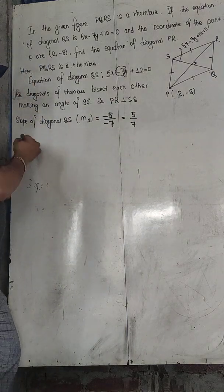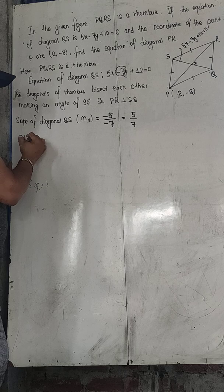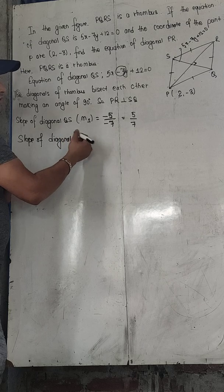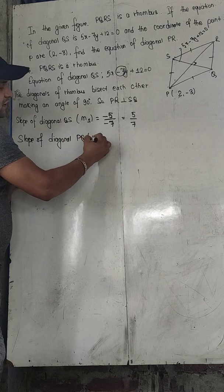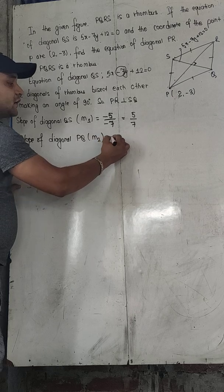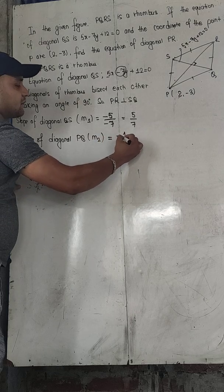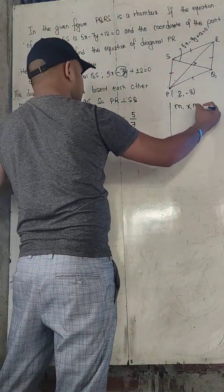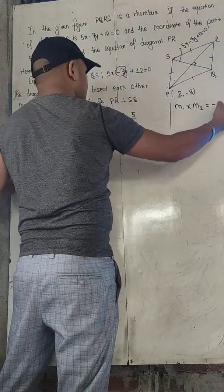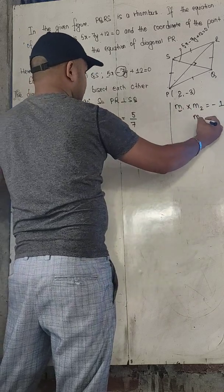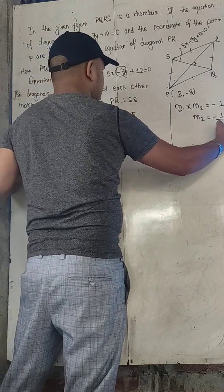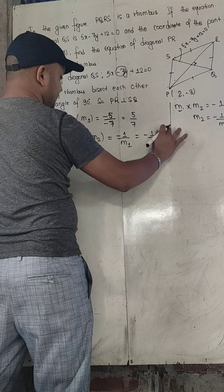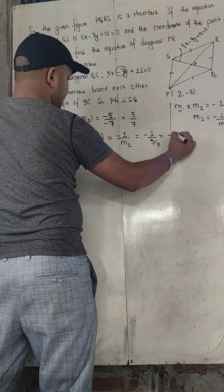So M1, the slope of diagonal QS, is 5 by 7. Now we can find slope of diagonal PR, calling it M2. Since the lines are perpendicular, we can obtain M2 as minus 1 by M1. When two lines are perpendicular, the product of their slopes is minus 1. So M2 equals minus 1 divided by (5/7), which gives minus 7 by 5.